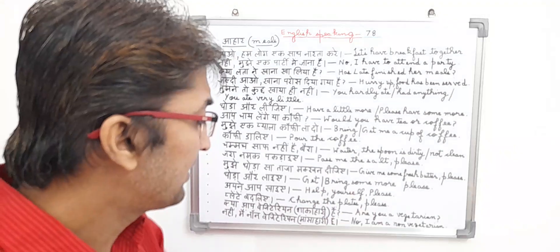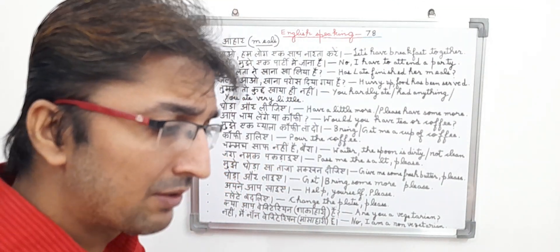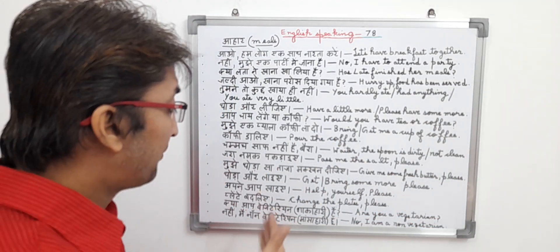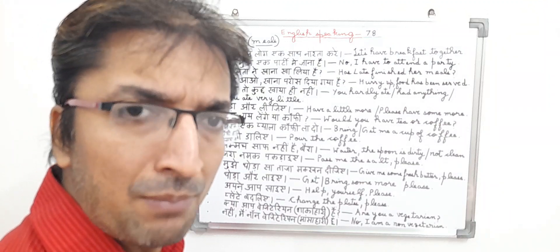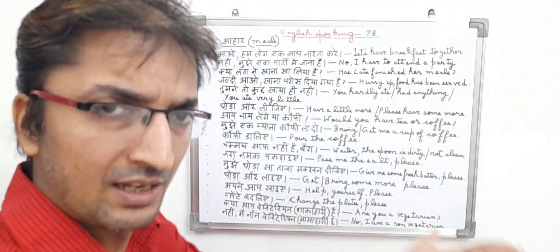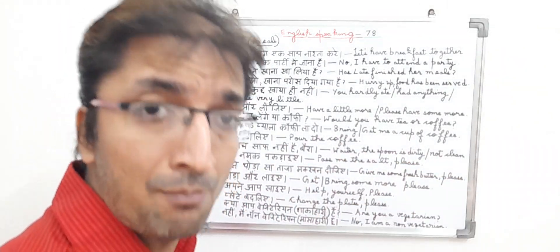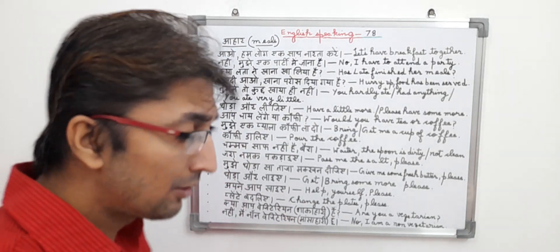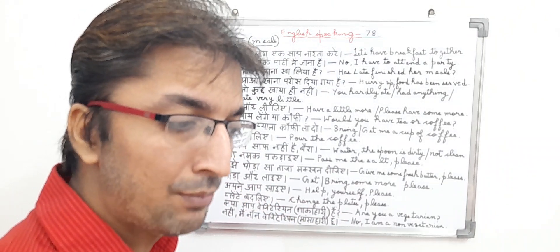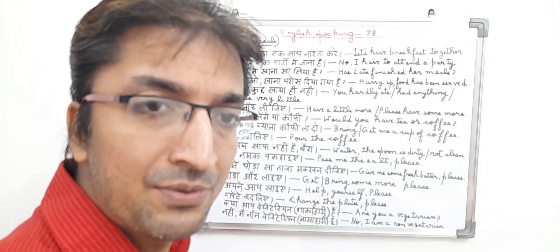Plate badaliye. In English, it means 'Change the plates, please.' The sentence basically means the person is commanding and ordering another person to change the plates — either they are not clean, dirty, or of irregular size. So 'Plate badaliye' in English means 'Change the plates, please.' He is requesting another person to change the plates. It is a requesting type and meal type sentence.